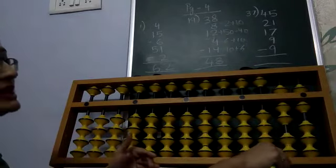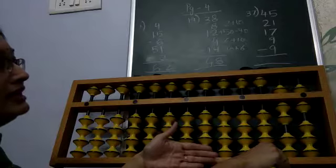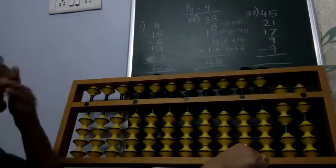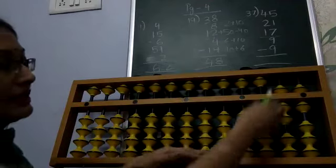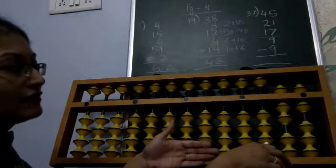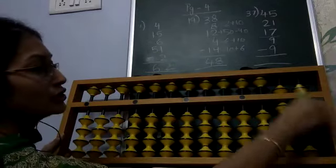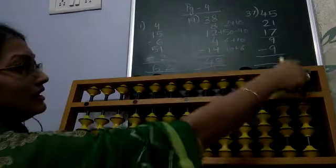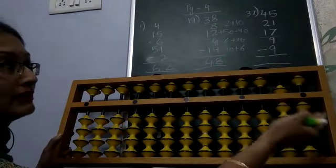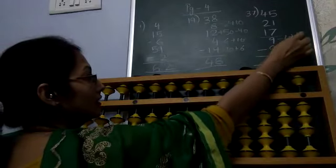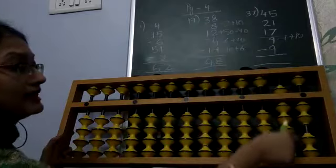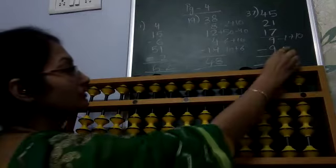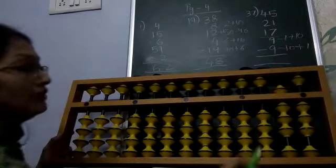For plus 17, the 7 is not possible directly, so big friend formula is minus 3 plus 10. Minus 3 is also not possible, so we apply the combination formula — minus 3 using small friend formula becomes plus 2 minus 5, then plus 10. Next, add 9: not possible, big friend formula is minus 1 plus 10. Then minus 9: not possible, big friend formula is minus 10 plus 1. The answer is 83.